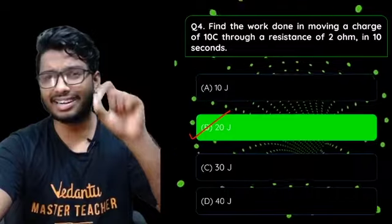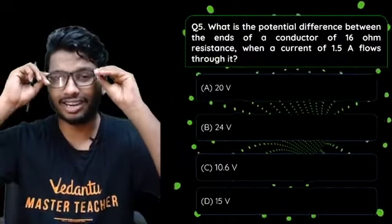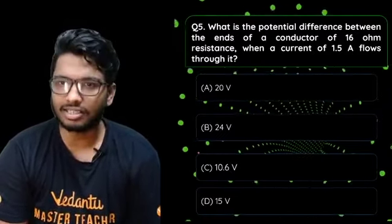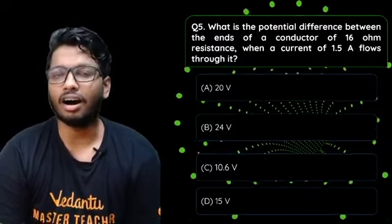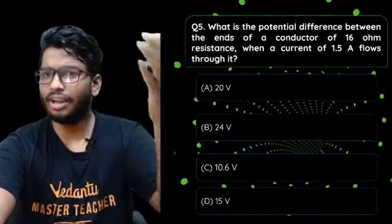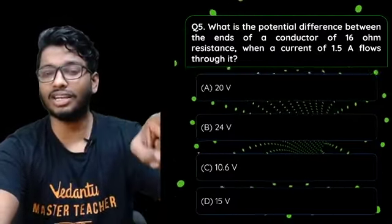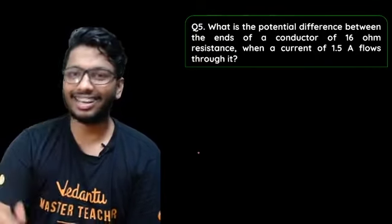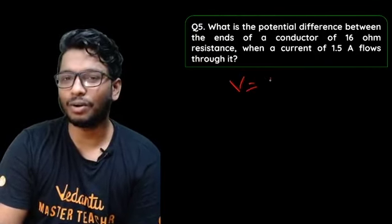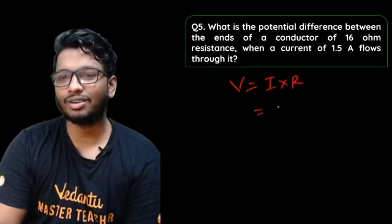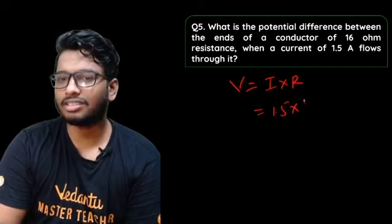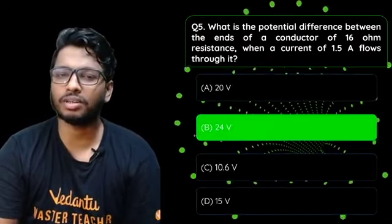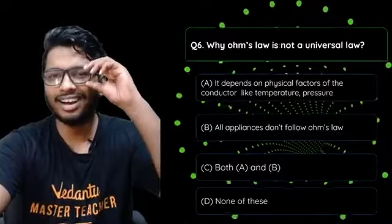Next question: what is the potential difference across a conductor of 16 ohms resistance when a current of 1.5 amperes is flowing through it? Options: 20 V, 24 V, 10.6 V, or 15 V. Using V equals I times R: 1.5 times 16 equals 24 volts. The correct answer is option B — 24 volts.